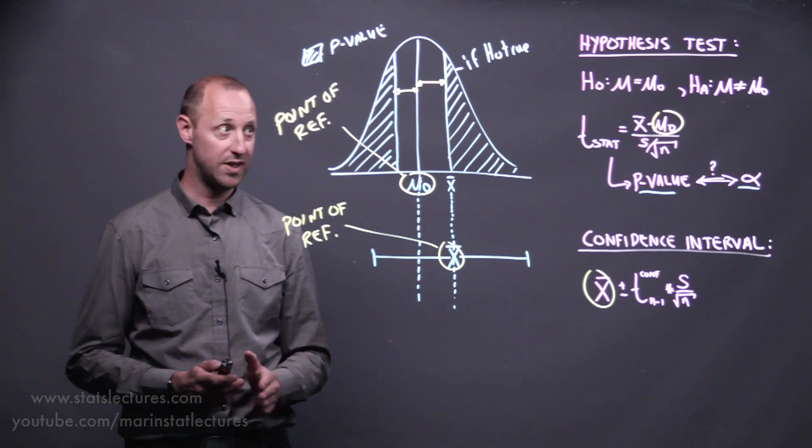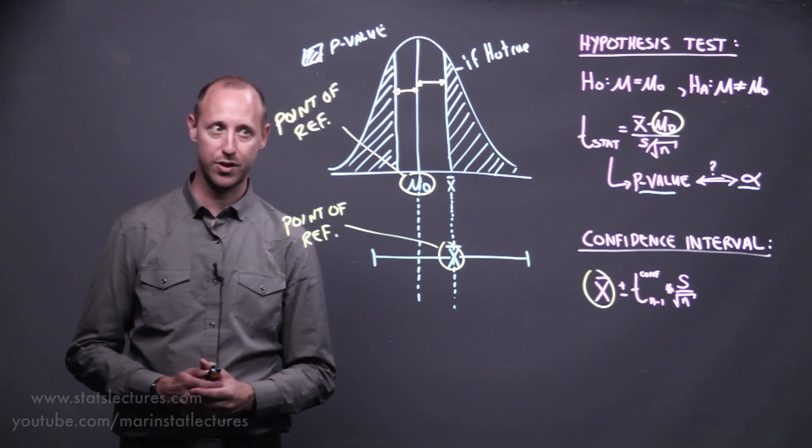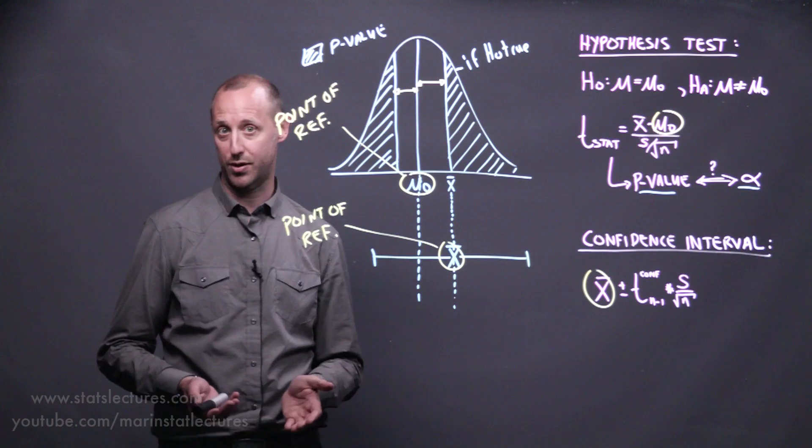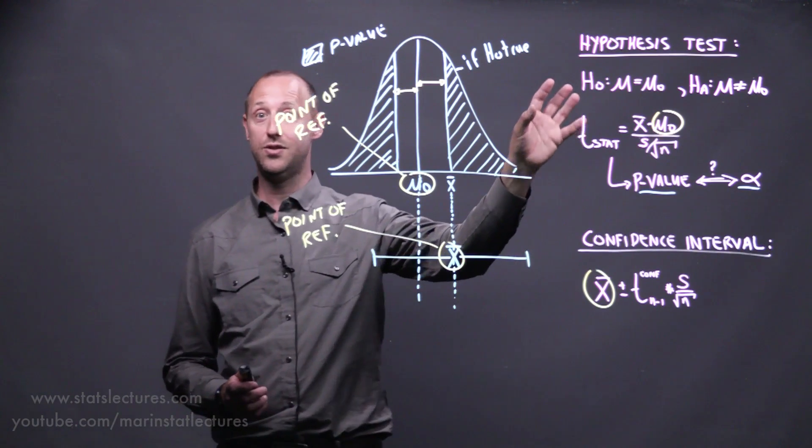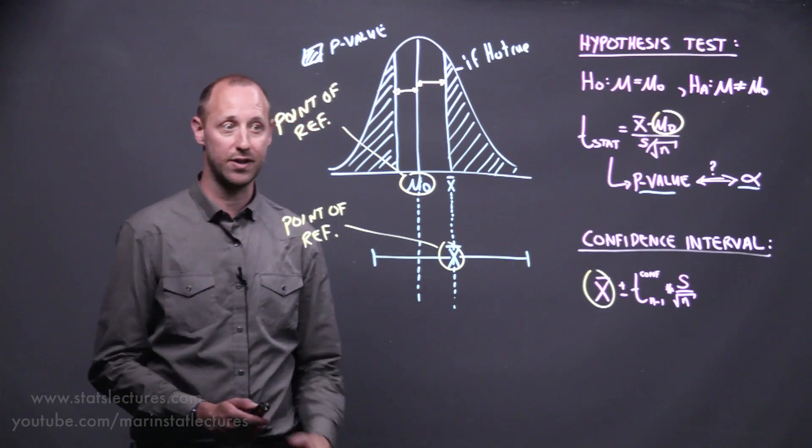So the two of these—the hypothesis test or the confidence interval—are always going to agree in the conclusion you reach, provided that both of them are two-sided and your test is using an alpha of 5%, your confidence interval 95% confidence.